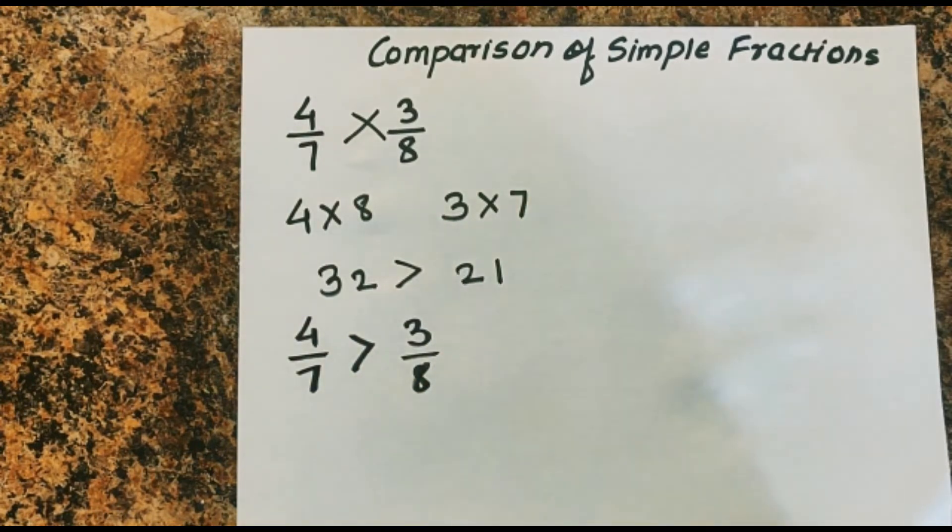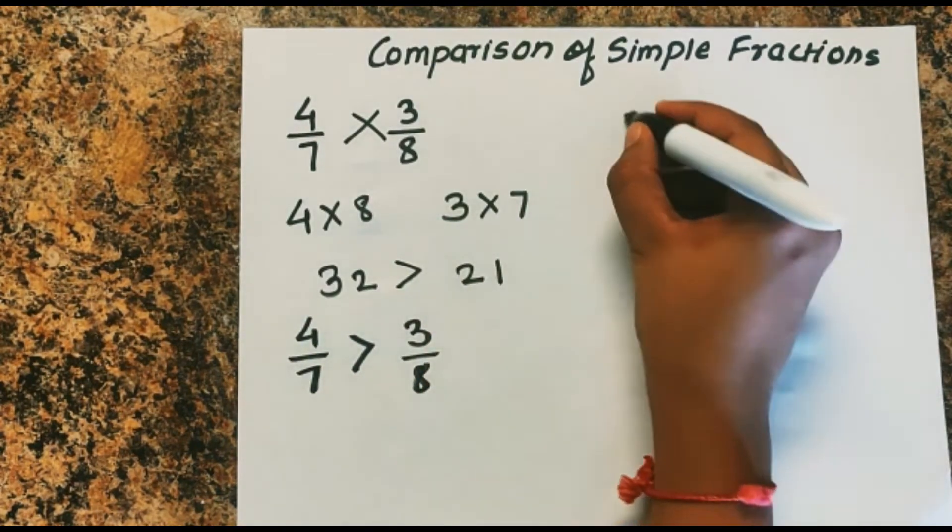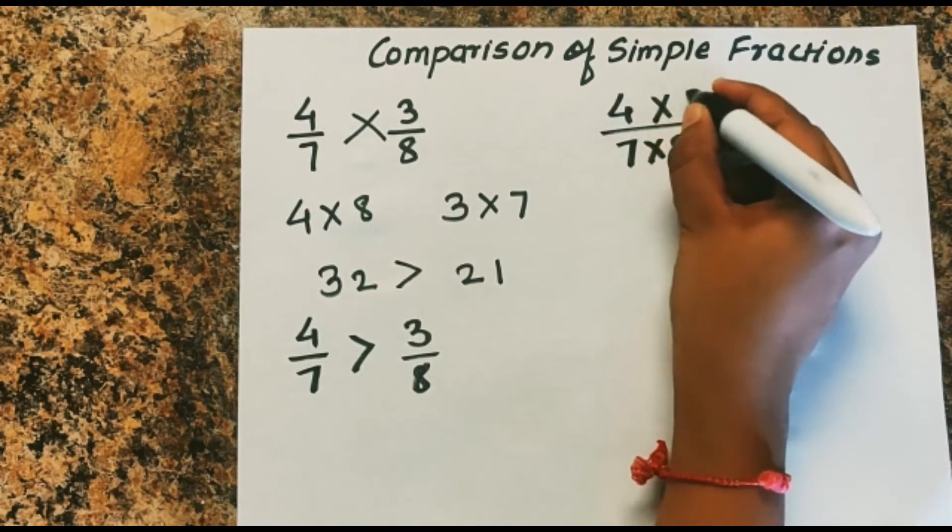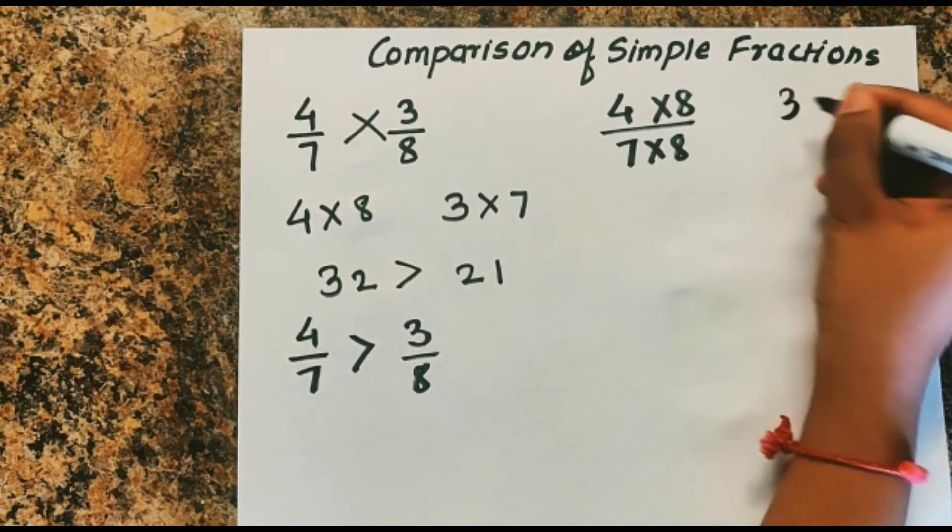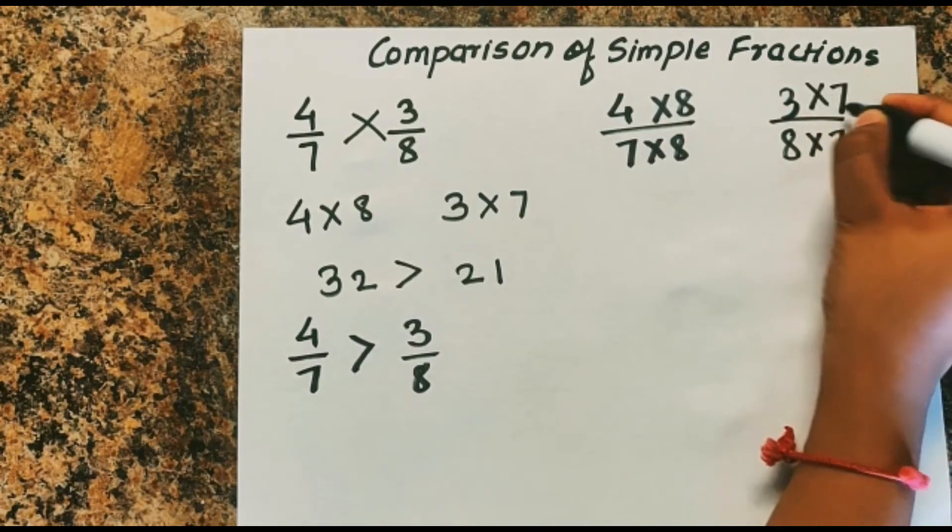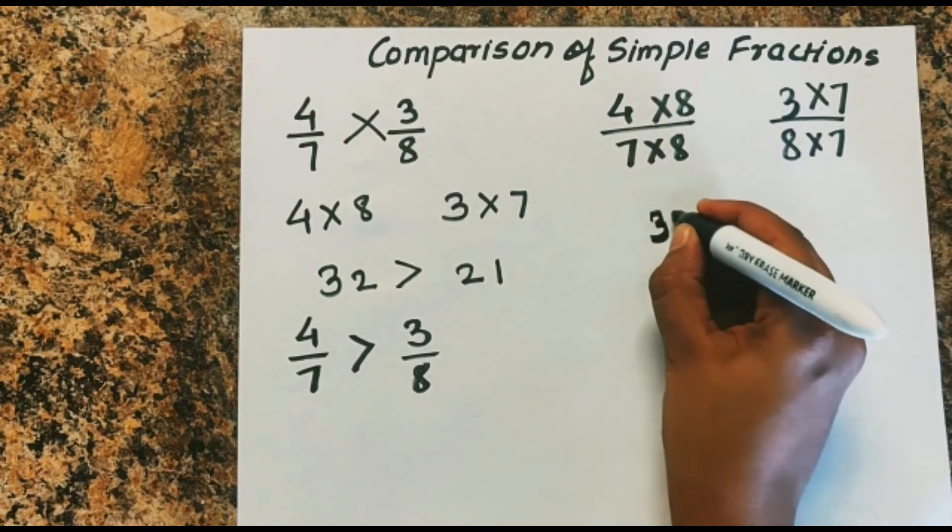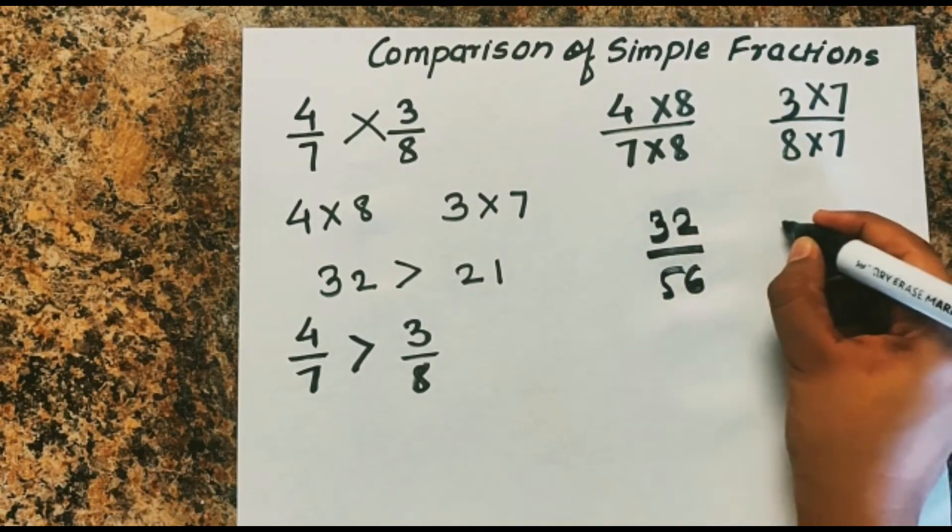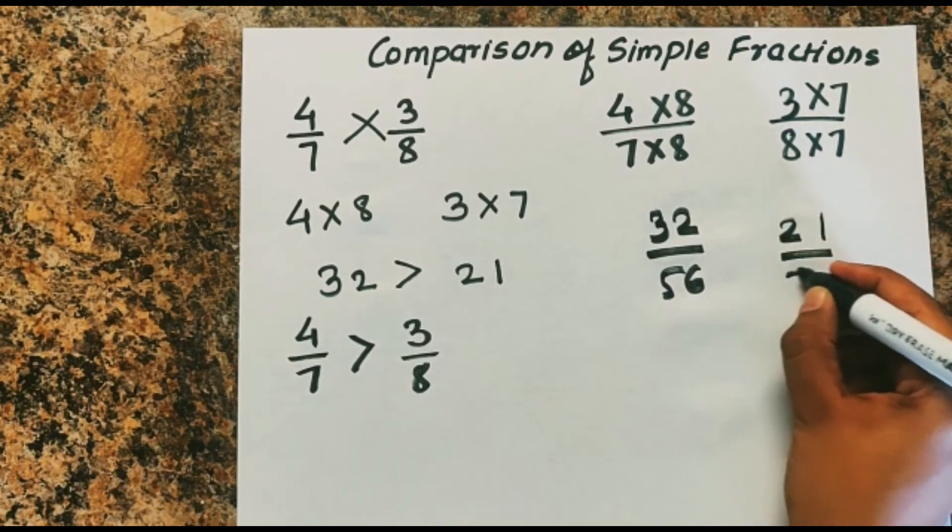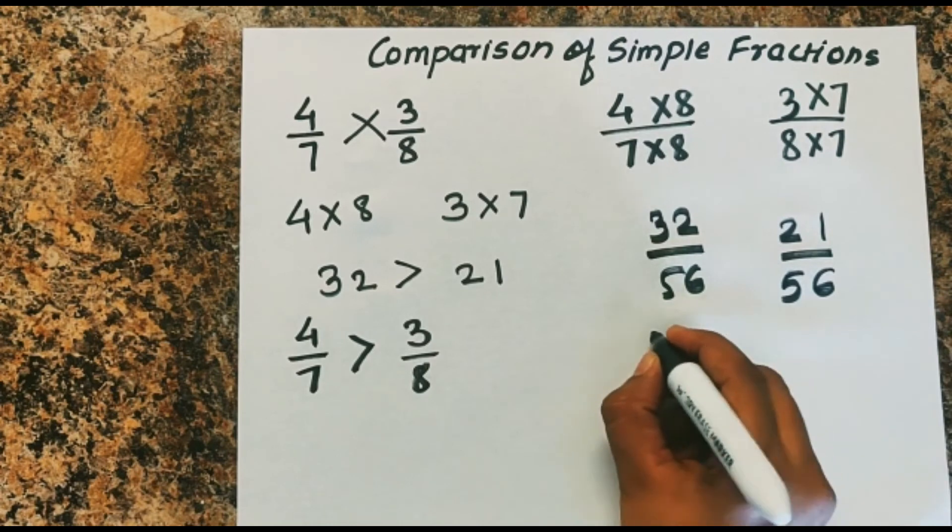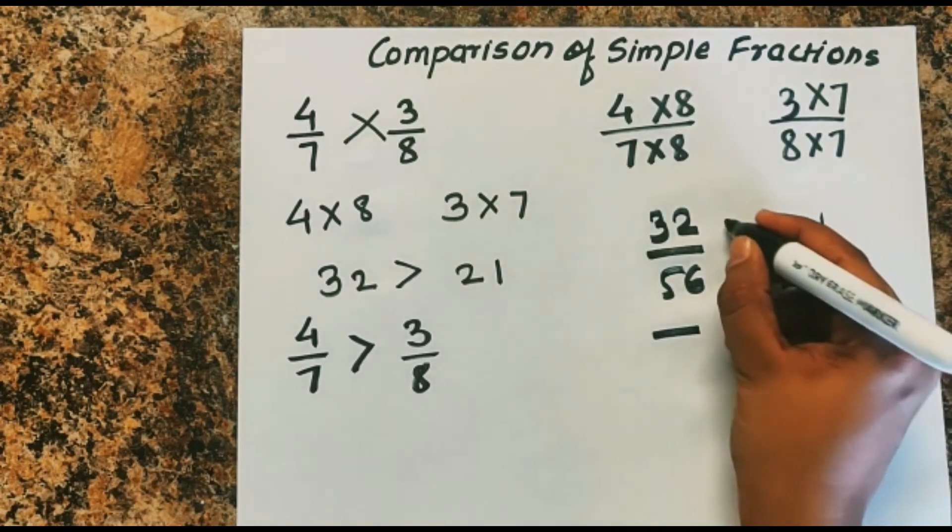The other way what you can do is you can make the base same, which means 4 into 8 over 7 into 8, and 3 into 7 over 8 into 7, which becomes 32 over 56 and 21 over 56. And finally you can say this one is greater.